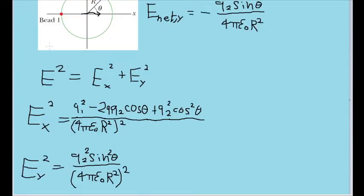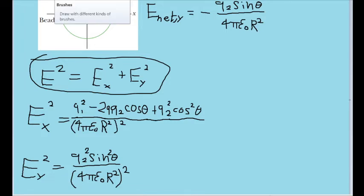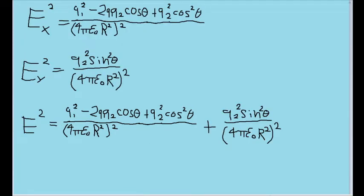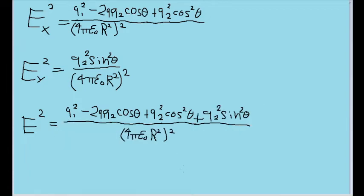Now let's plug these squared components into our Pythagoras formula up here to find a better equation for the total magnitude of the electric field. I have now added together both of the components we calculated above. Once again, both of the denominators are the same, so we can put the numerators above the same denominator. And that's what I've done.